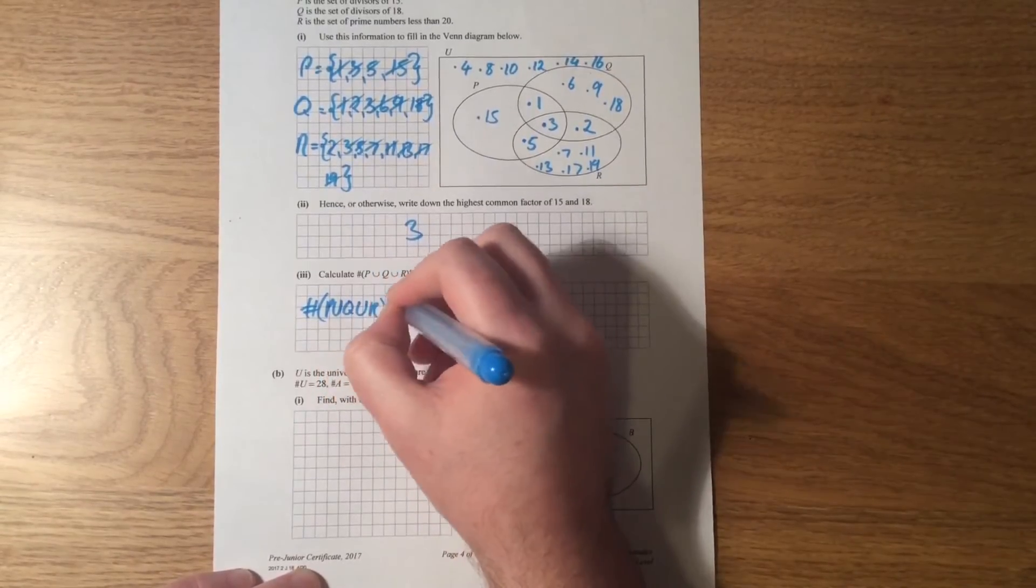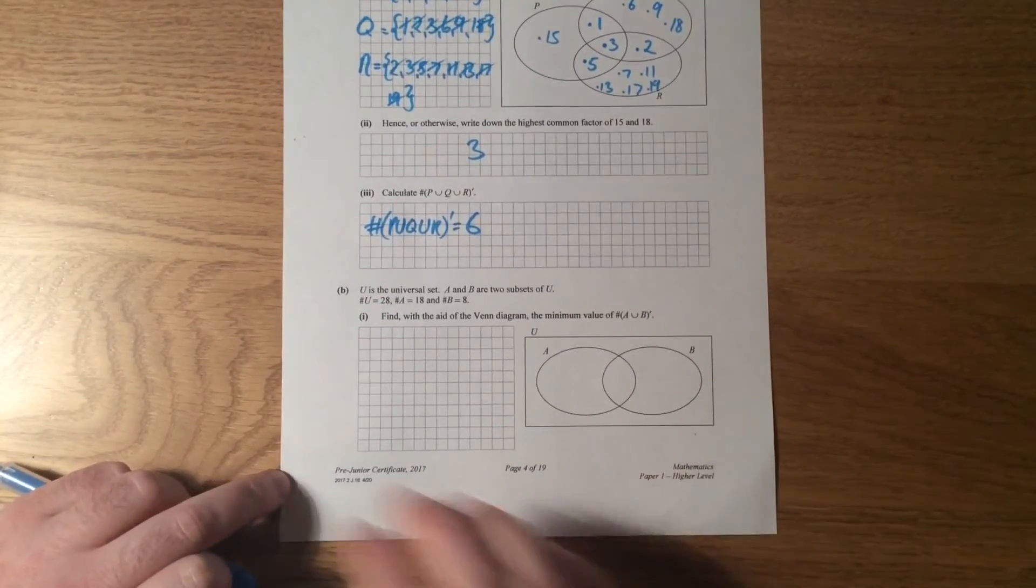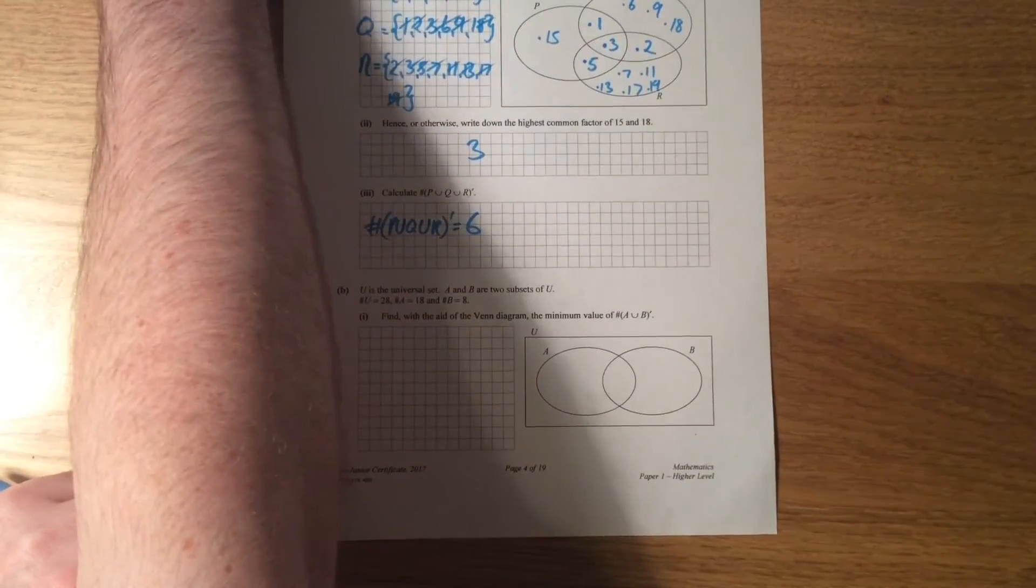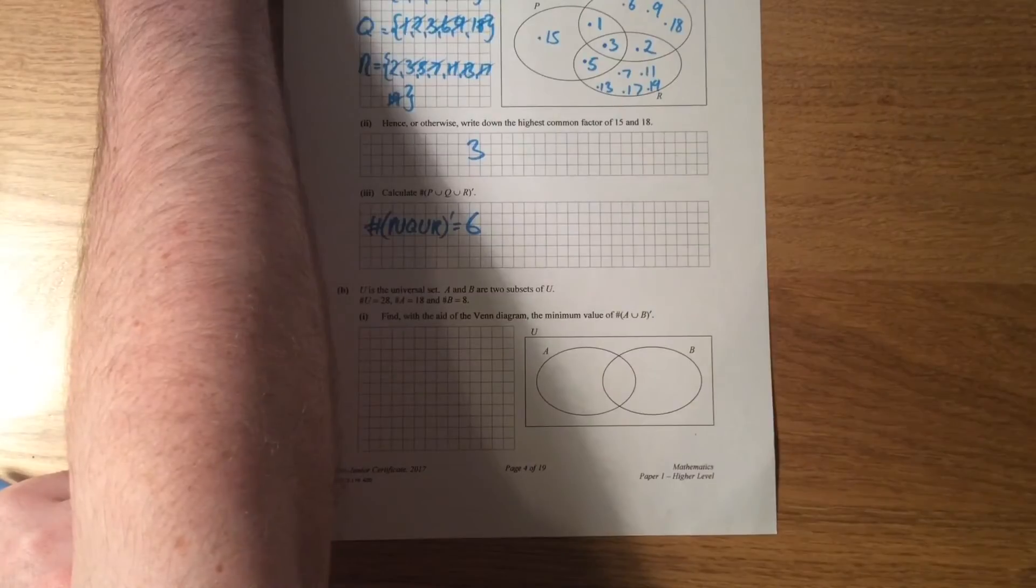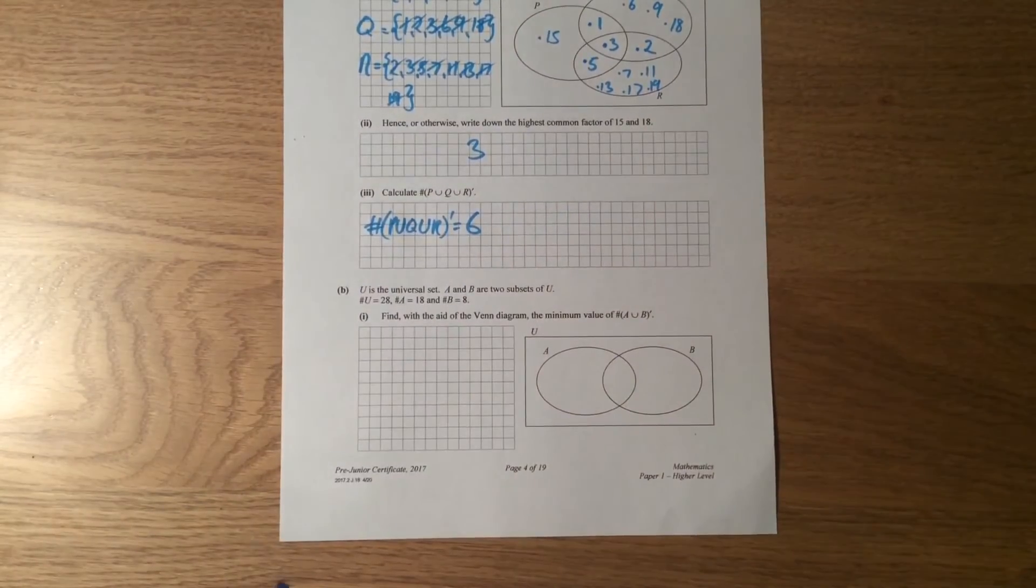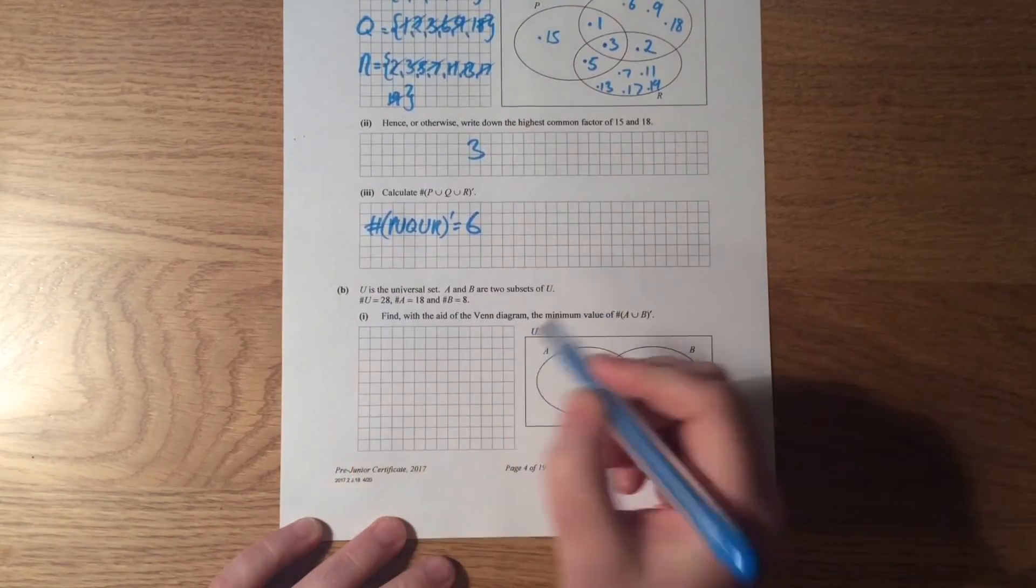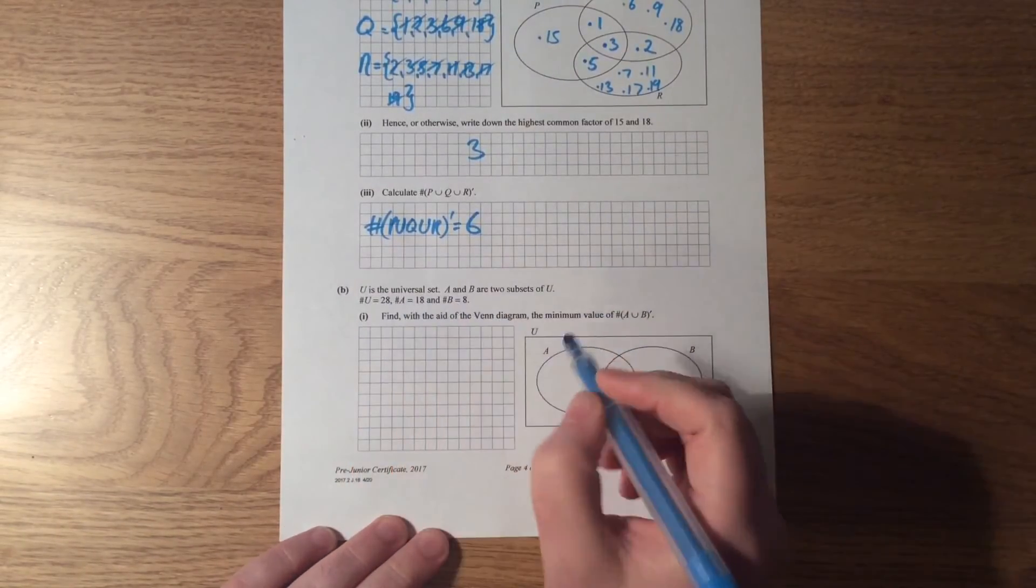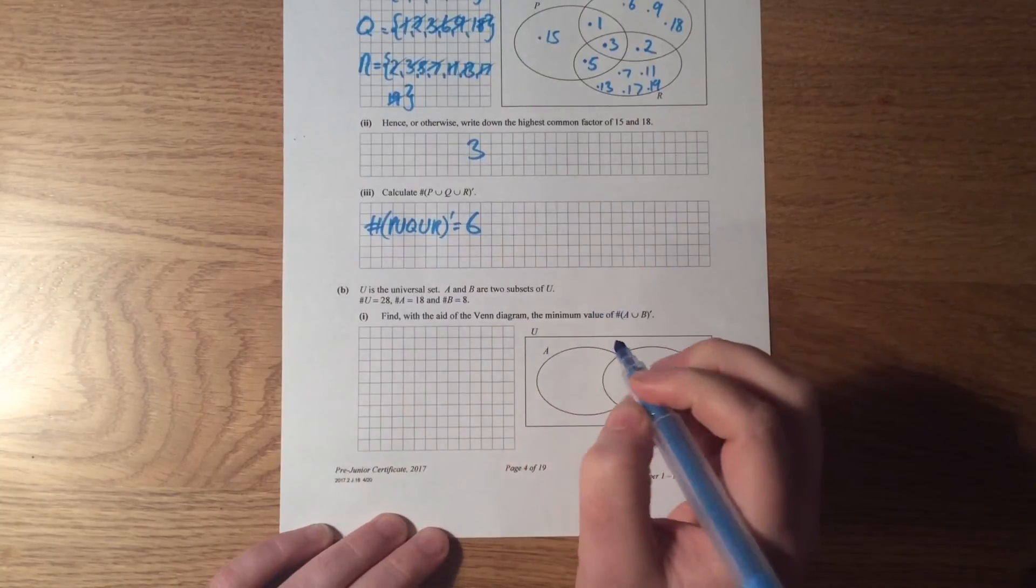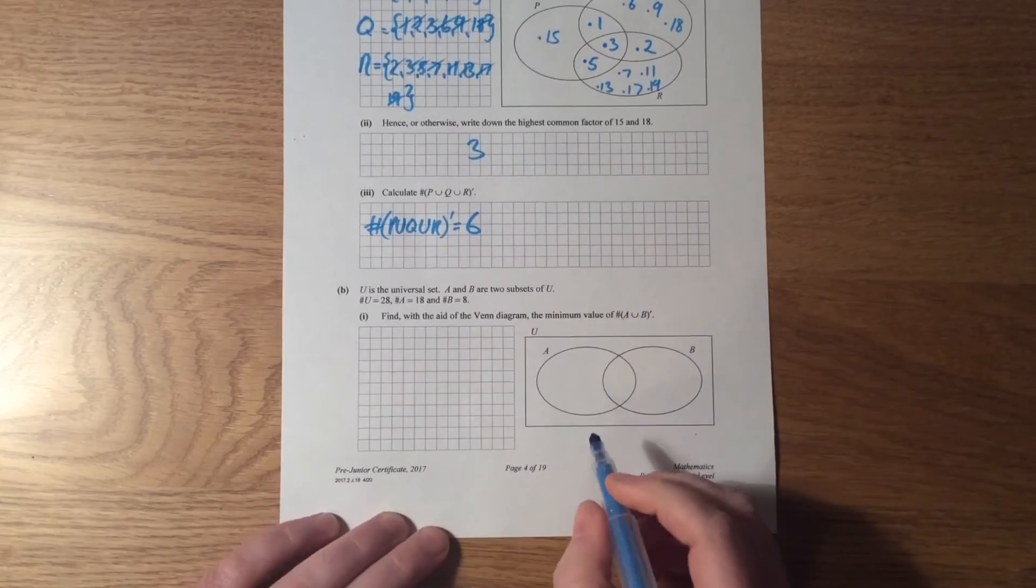Okay, so the hashtag of P union Q union R complement is equal to 6. Okay, and let's have a look at part B. So part B says, using U as a universal set where A and B are two subsets of U, it says that the number of elements in the universe altogether is 28, and the number of elements in A are 18, and the number of elements of B are 8.